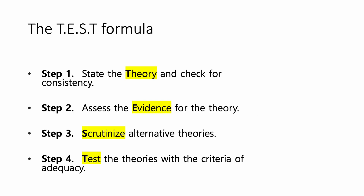How do we evaluate inference to the best explanation? We have the TEST formula. There are four steps. Step one: state the theory and check for its consistency. Step two: assess the evidence for the theory. Step three: scrutinize alternative theories. Step four: test the theories with the criteria of adequacy. Let me talk about steps one and four in more detail in subsequent slides.